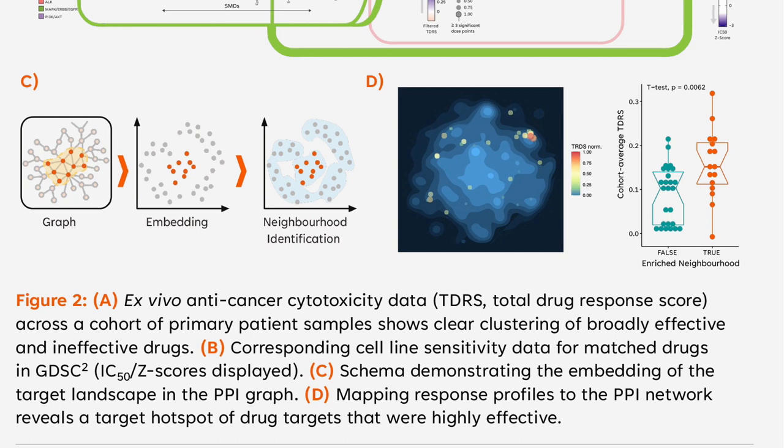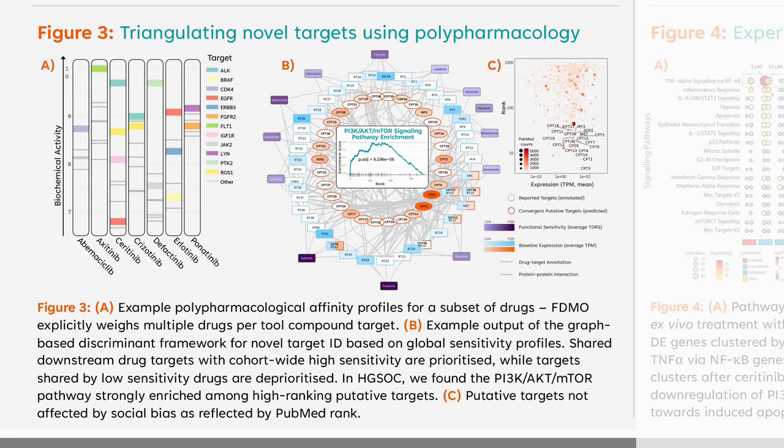To understand the molecular underpinnings of drug sensitivity in terms of their targets, we built the target landscape based on the interactome using a graph embedding algorithm shown in panel C, mapping sensitivity profiles of each drug to its protein targets. Panel D reveals the target hotspot, which is the topological neighborhood where targets of drugs with high sensitivities are significantly localized. This confirmed our hypothesis that primary-derived functional sensitivity data can be utilized for novel target identification.